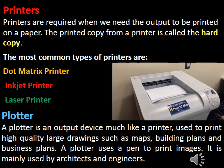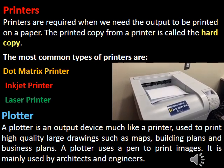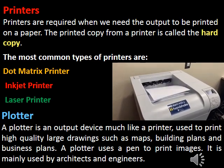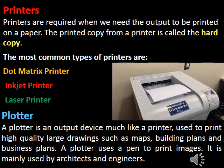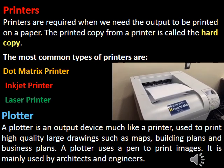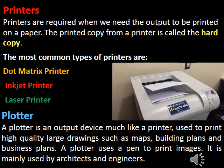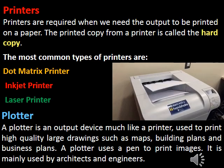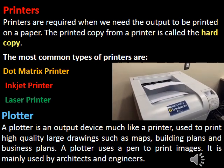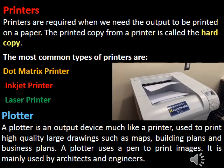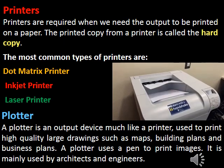The third type of output device is the plotter. A plotter is an output device much like a printer, used to print high quality large drawings such as maps, building plans and business plans. A plotter uses a pen to print images. It is mainly used by architects and engineers.